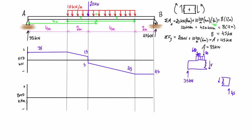Now we're ready to look at the bending moment diagram. For a simply supported beam, the internal bending moment at each end must equal zero, since there are no fixed connections to resist bending. So we start at zero and end at zero. Where we have area on the positive side of the shear force diagram, we take that area as the change in magnitude on the bending moment diagram. Horizontal lines in the shear diagram produce a linear change in the BMD, and sloped lines produce a parabolic change.